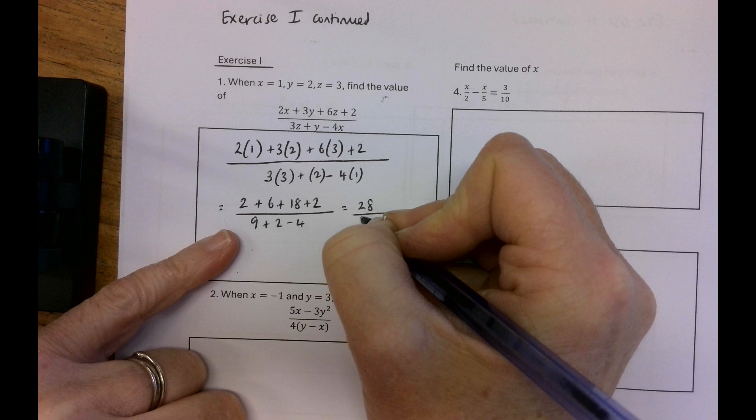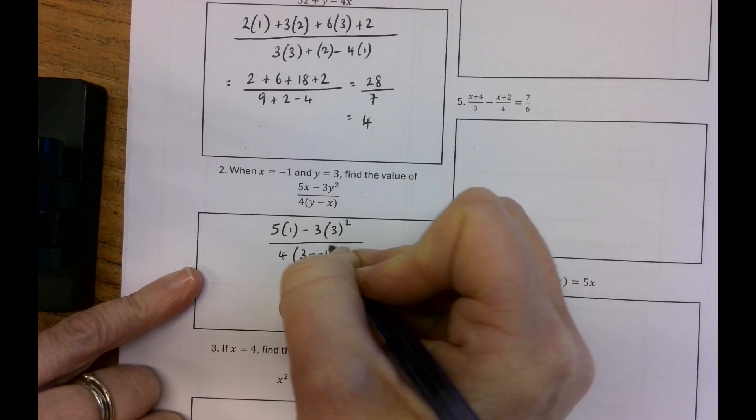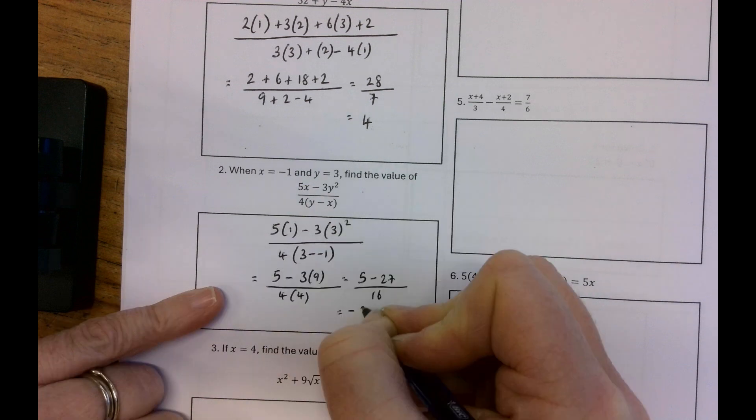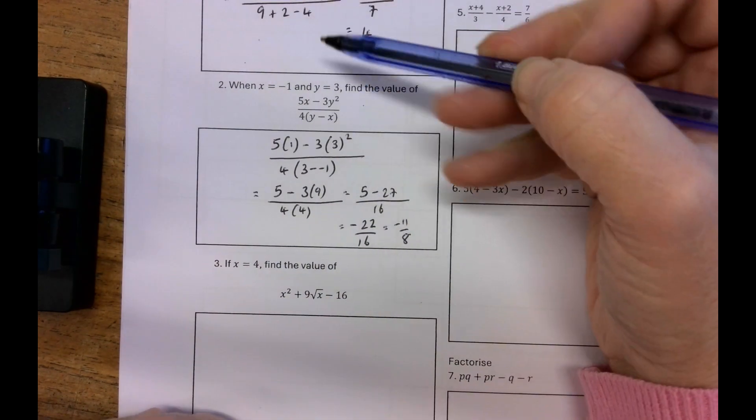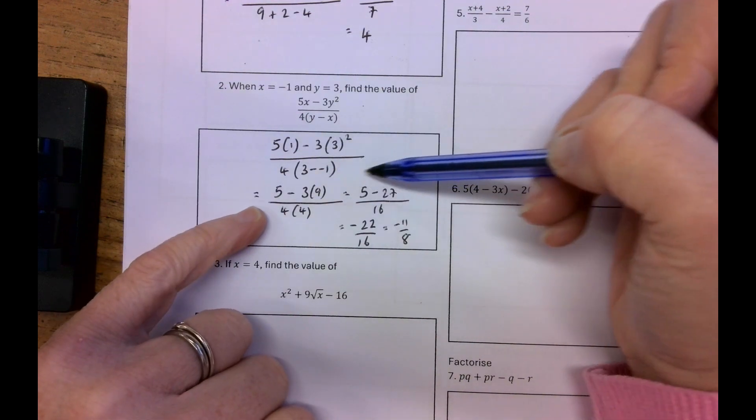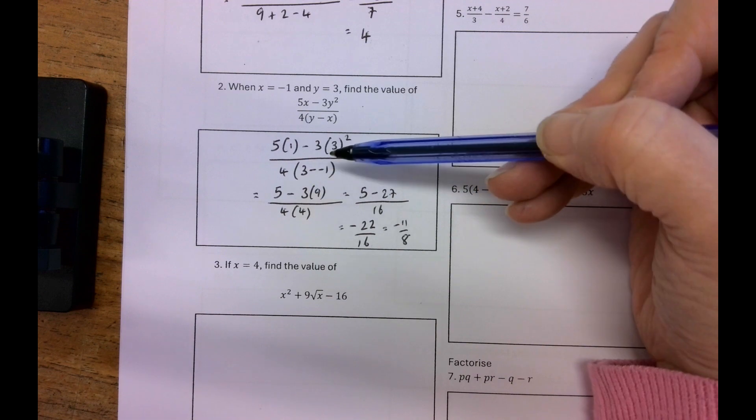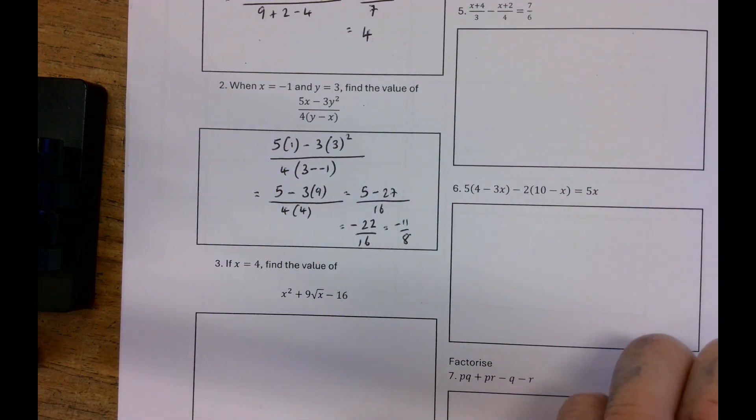When x equals minus 1 and y equals 3, find the value of 5x. So 5 by 1, x equals minus 1. So 5 minus 3y squared over 4x. So 5 minus 27 over negative 4. Negative 22 over negative 16 which is minus 11 over 8. It's a weird answer. Just check the 5 by 1 minus 3y squared, 5 minus 27. Yeah okay so I can't see anything wrong with that so it's just a weird answer.